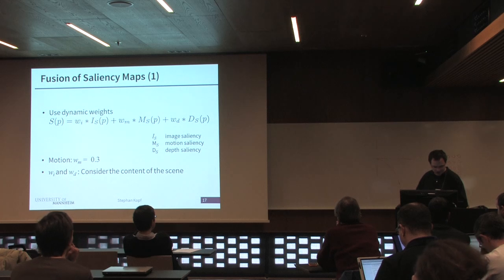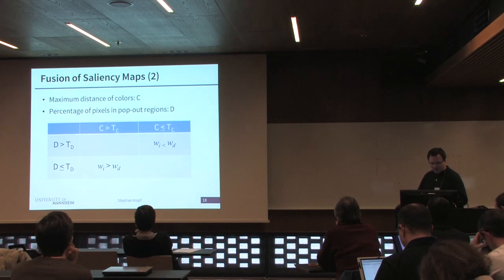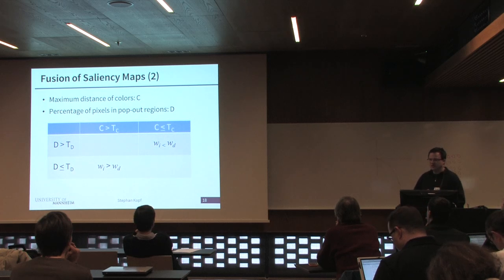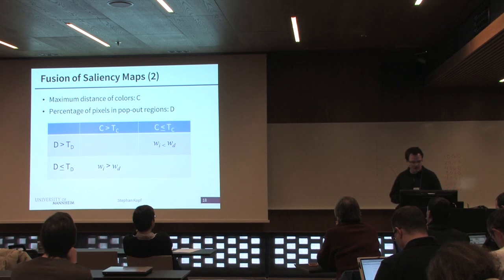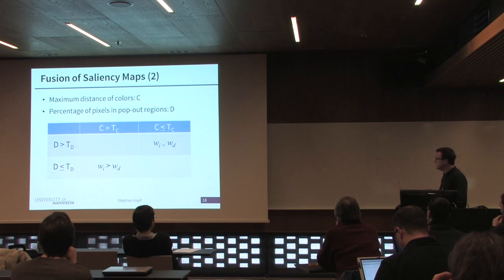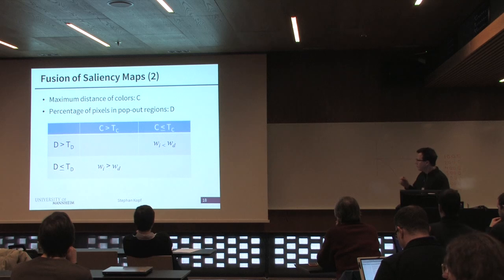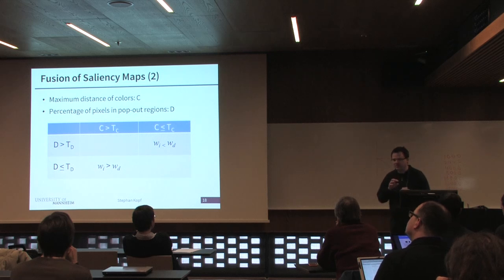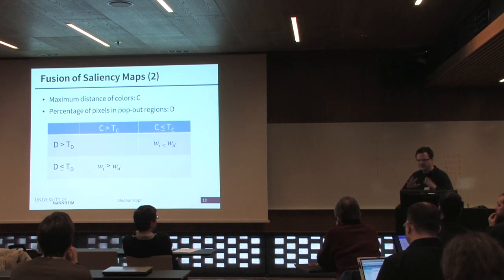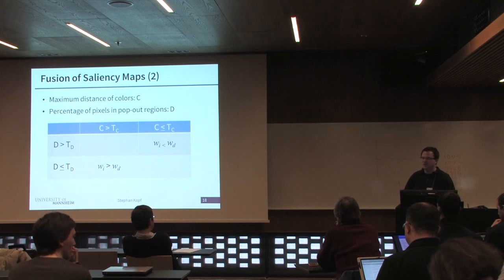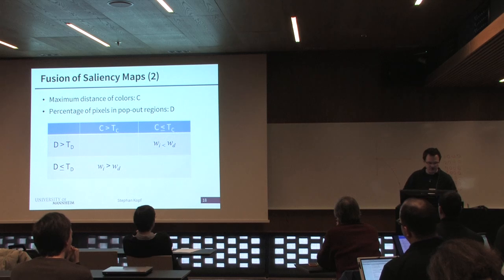Constant weights should not be used for the other two parameters — image and depth saliency. For those two, we have to look at the content of the scene to choose suitable weights. From the saliency operators, we get information about a frame, for example the maximum distance of colors in a frame, called C. If we have great color differences in a scene, salient objects are typically detected very well. If a scene has only blue sky and sea, everything is blue and it's very difficult to identify salient regions. But with a big color difference, it's much easier, and the probability of getting good image saliency results is higher.